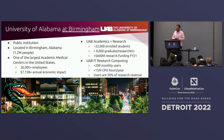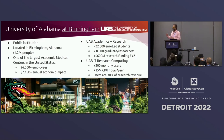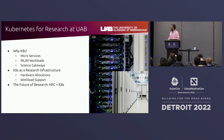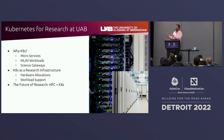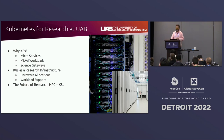If you know anything about sports in Alabama, just to highlight: we're the University of Alabama at Birmingham. Our mascot is a dragon, not an elephant. What I'll do is talk a little bit about why we were interested in Kubernetes to begin with, how it sits in our research infrastructure, and then go over some of the future use cases we see for Kubernetes in the research environment.